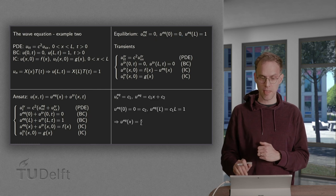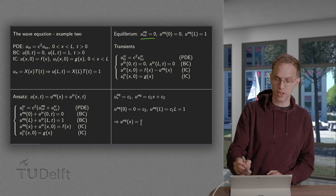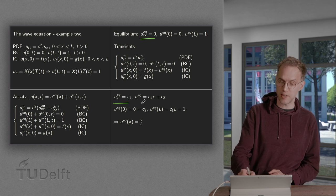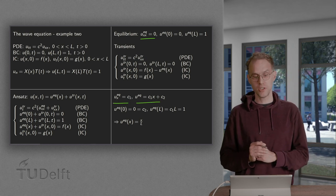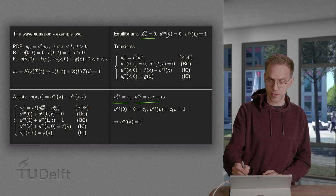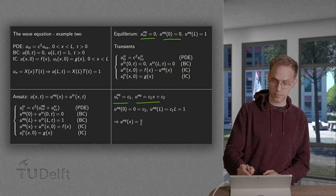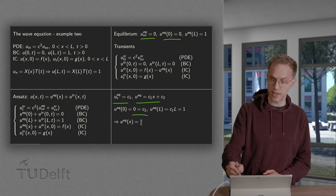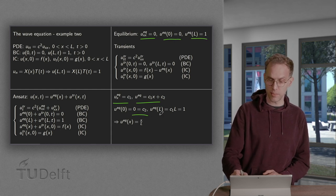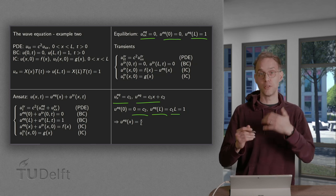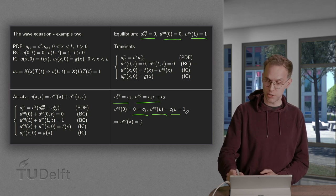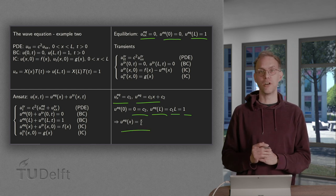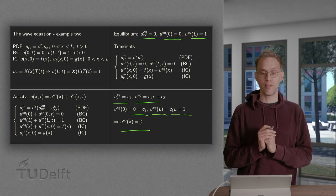Let us solve for the equilibrium solution first. We have u_xx = 0. Integrate once: u_x = c1. Integrate again: u = c1*x + c2. Plugging in x = 0 gives c2 = 0. Plugging in x = l gives c1*l = 1, so c1 = 1/l. Therefore u_equilibrium = x/l. There we have our equilibrium solution.